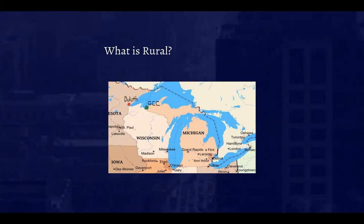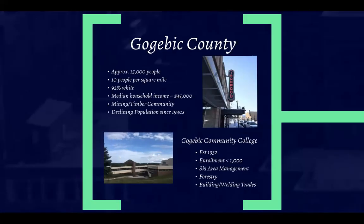The nearest Target and Starbucks is in Duluth, Minnesota — we have to drive all the way across Wisconsin into Minnesota. Gogebic County has about 15,000 people, equaling roughly 10 people per square mile. Most of the population is in three main cities. Demographically, it's 92% white with a median household income of less than $35,000. It's mainly a mining and timber community, which isn't really thriving these days.